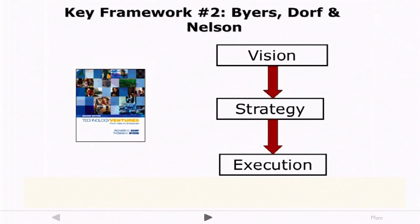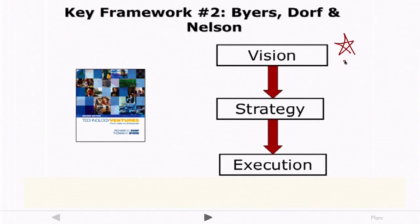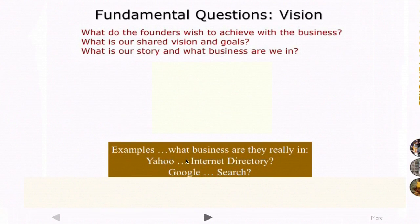Our second key framework comes from the textbook we're using for the class, Technology Ventures. This framework talks about the entrepreneurship process as proceeding in three stages. It starts with having an initial vision, and then you proceed from that vision to creating the strategy you'll use in the venture, and then executing on that strategy. So we have three essential steps: vision, strategy, and execution.